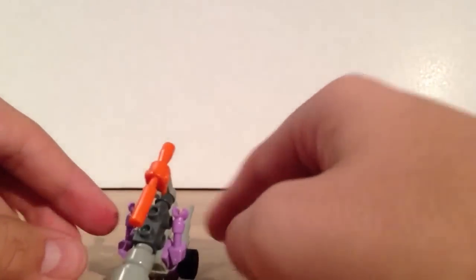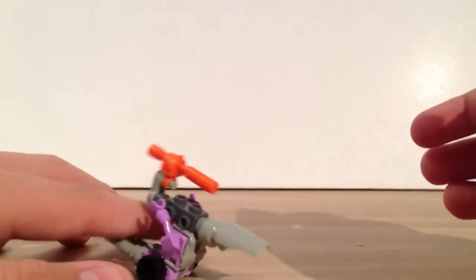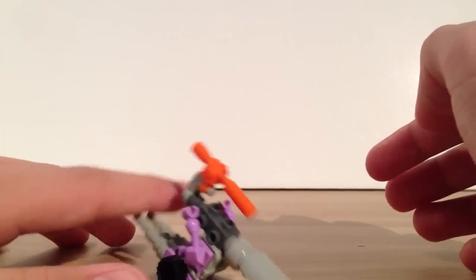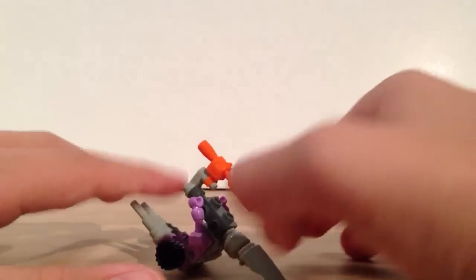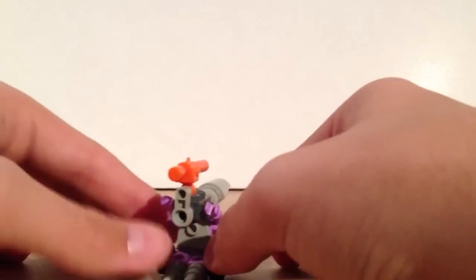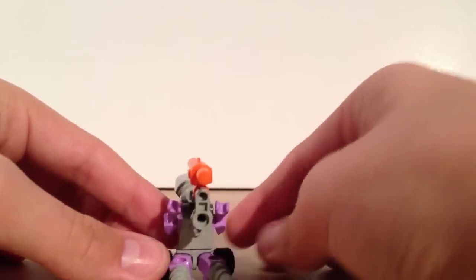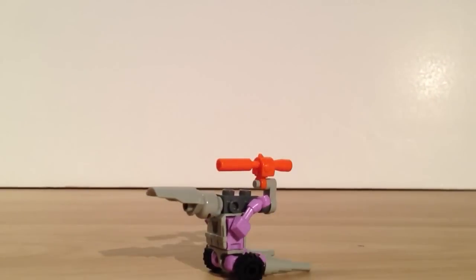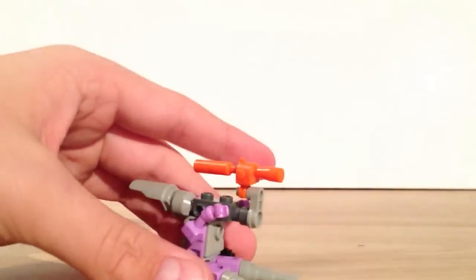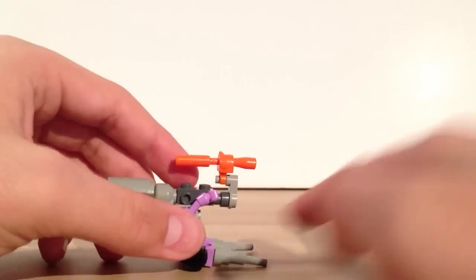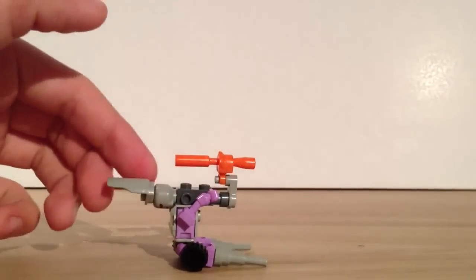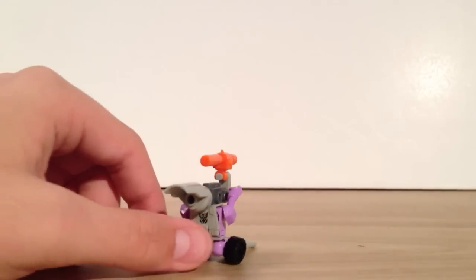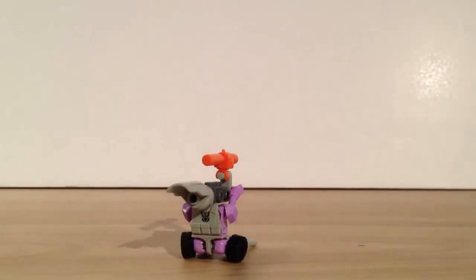Here you have Galvatron in his tank mode. As you can see, as he was back heavy in robot mode, he is clearly front heavy in this configuration. You can do a little bit of splaying of the legs here to get him to actually stand up. The instructions have you put the legs together, but if you do splay them, he will stand. There's Galvatron in tank mode.